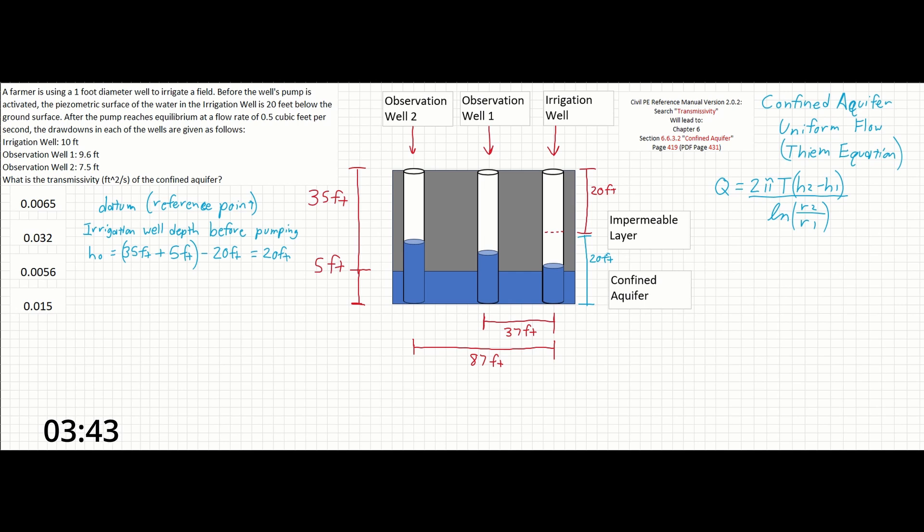Now that we have our datum or reference point from the ground up, we can subtract the given drawdowns provided for each observation well to find the heights of the piezometric surface above the ground. Once these values are found, we have all of the information we need to solve for transmissivity in the Thiem equation.